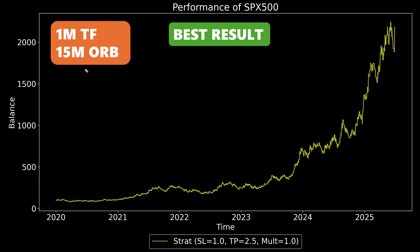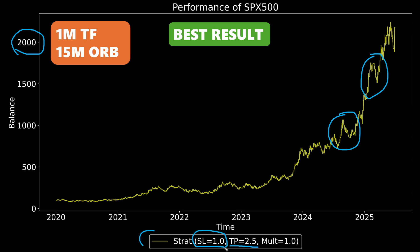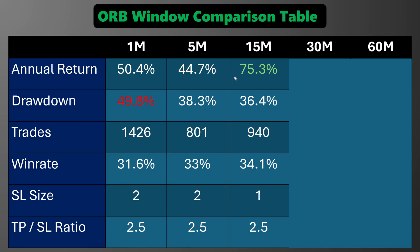Then we come to the 15-minute ORB, and this is where I saw a real jump in performance. The final balance was far bigger than either the 1-minute or 5-minute, and while it did have some drawdowns, overall the equity curve is nowhere near as choppy as the other two. The best settings here were a 2.5x take profit, and the stop loss didn't have to be increased — I just placed it at the bottom of the opening range. That range was big enough that trades weren't getting stopped out too often. With those numbers side by side, the difference becomes obvious: the annual return on the 15-minute ORB is far bigger, and the drawdown actually decreased slightly from the 5-minute. The win rate trend continued upward as well, meaning on pretty much every metric the 15-minute ORB was better than the previous two.